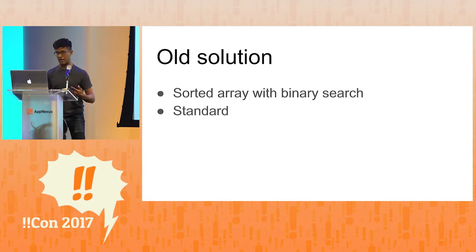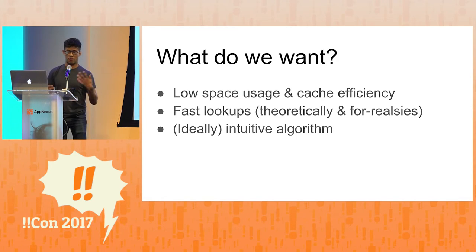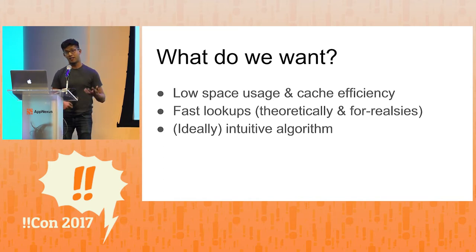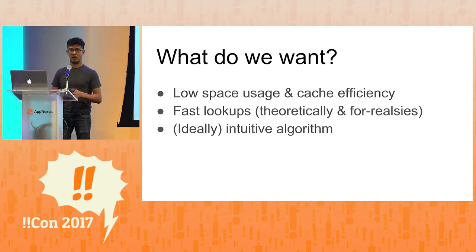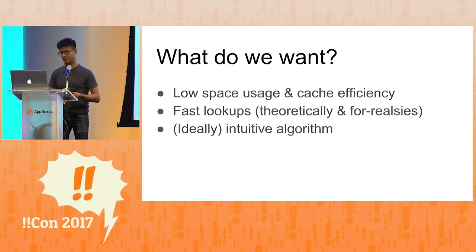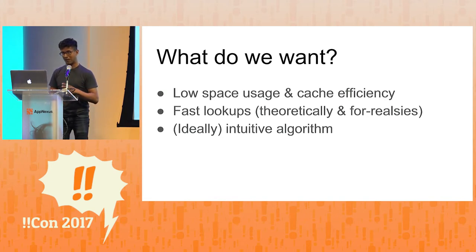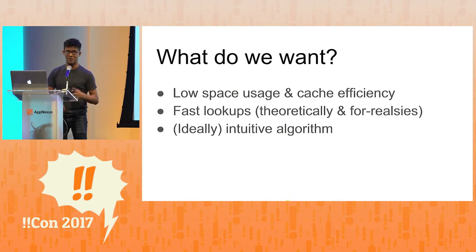That's the question we ask ourselves. What does better look like? What do we want? Ideally, we want something better than the theoretical guarantees of binary search — so maybe better than O(log n). That would be great. Low space usage, cache efficient — that would be awesome. And in the battle between intuitive and unintuitive, I always prefer the intuitive algorithm. That would be amazing as well.